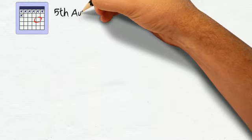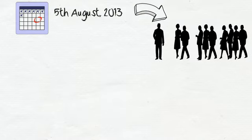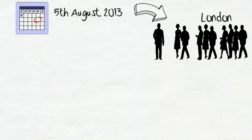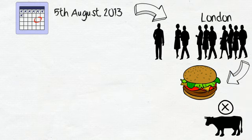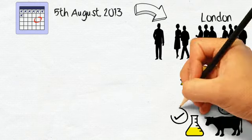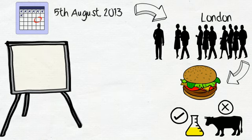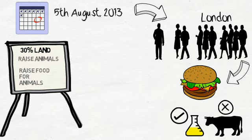But before that, let's go back in time to the 5th of August 2013. On this day, various journalists from around the world assembled in a London television studio. They had come to witness the world's first hamburger made of meat which was not taken from an animal but grown from scratch in a laboratory. The world currently uses 30% of its land to either raise livestock or to raise food for these animals.